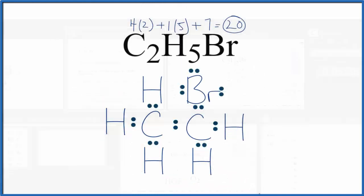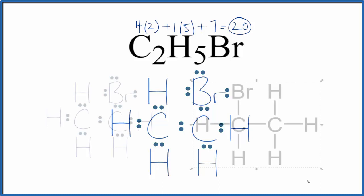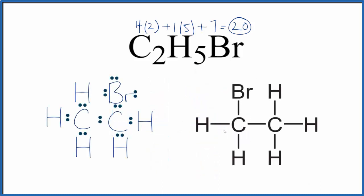Let's go back. Do note that we could also write this structure like this, where each line represents a pair of electrons, and then we don't write the lone pairs on the bromine. This is Dr. B with the Lewis structure for C2H5Br, bromoethane. Thanks for watching.